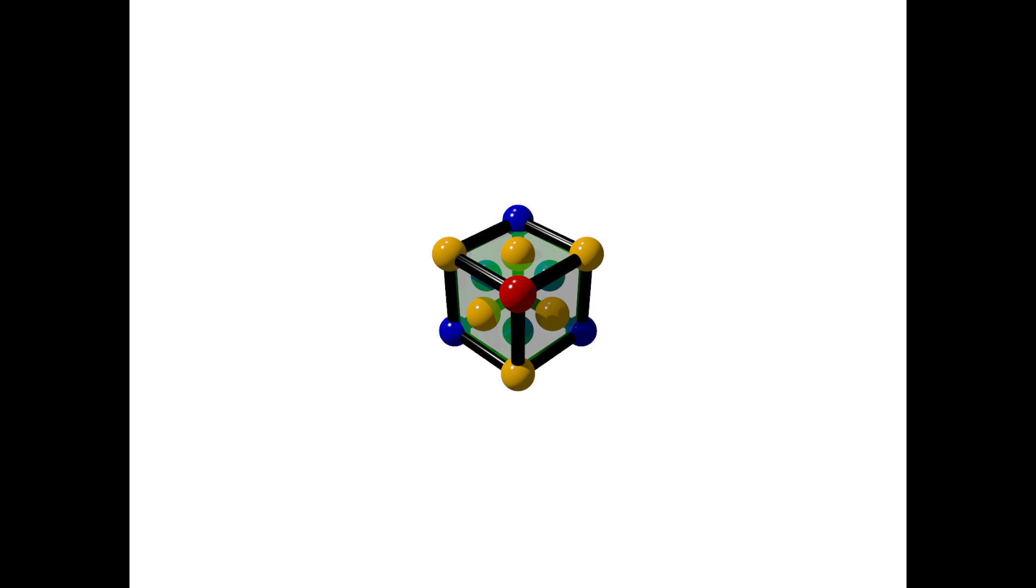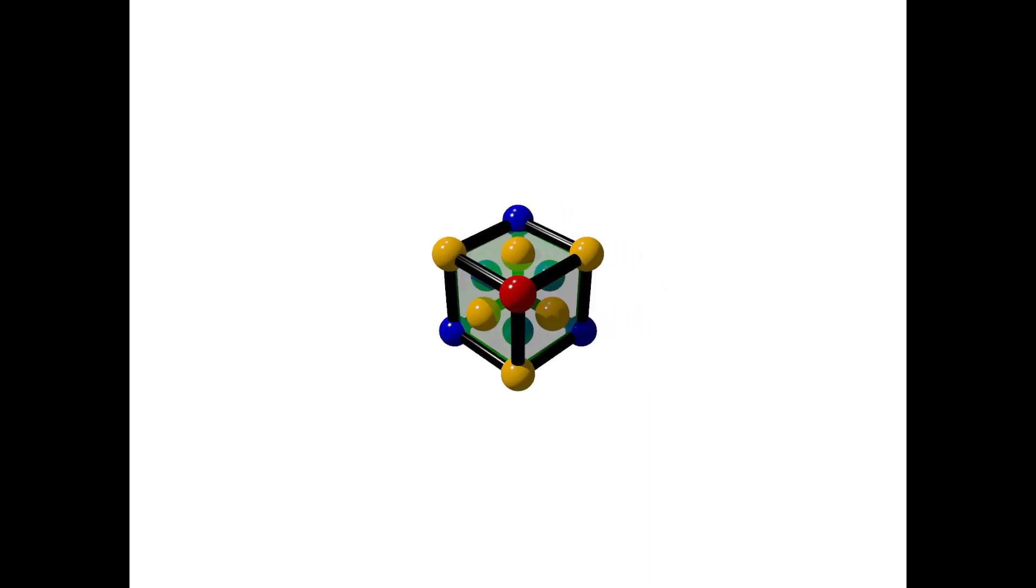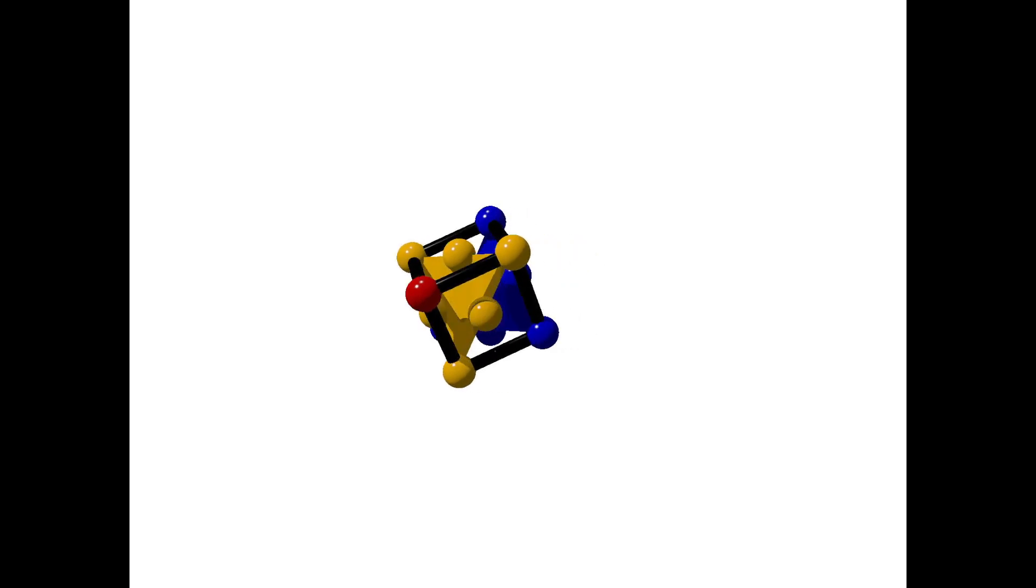We can see that there is a sphere occupying each corner of the cube. In addition, there is a sphere occupying the center of each face of the cube. Paying attention to the colors of the spheres, we can see the arrangement of the ABCABC layers within the cube.